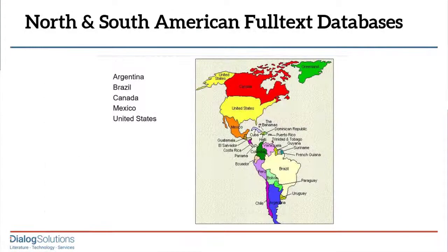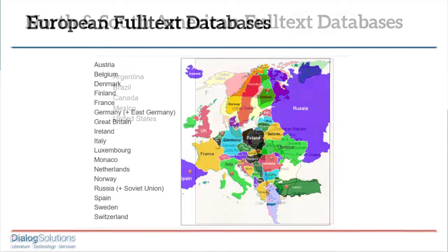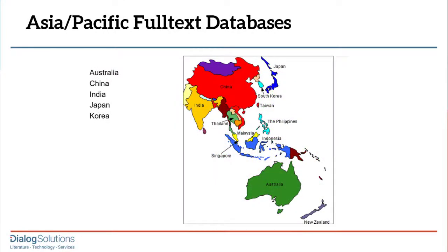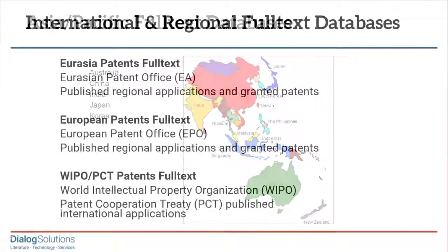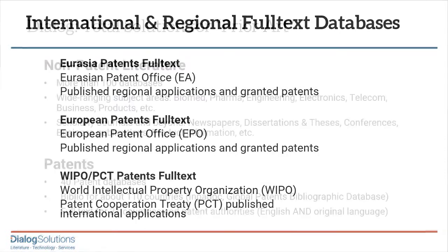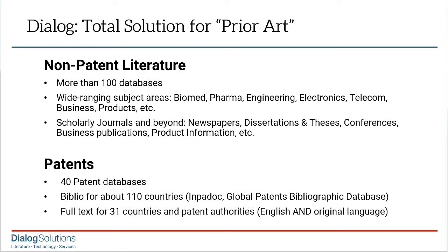So you can search patents from China or Korea, for example, using English, and if you choose to, you can download these records with only the English language portions. In addition to the full text, these records have enhancements like family information, legal status, citations, and more.